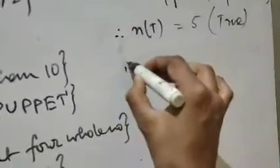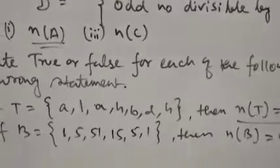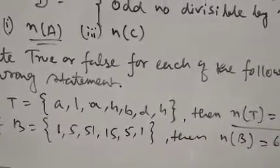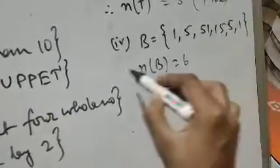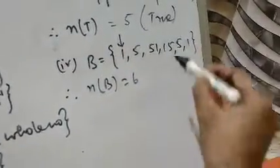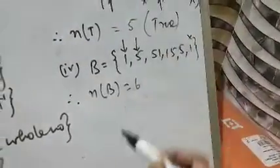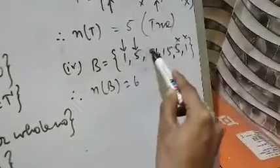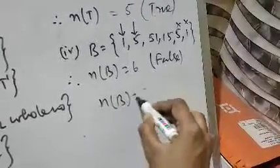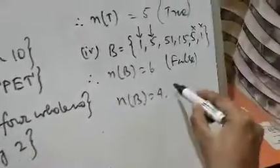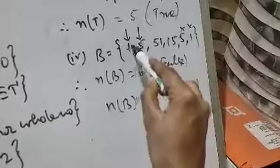Question number 4: set B = {1, 5, 51, 15, 15, 5, 1} and it is stated that n(B) = 6. Let us check — element 5 is repeated and element 1 is repeated, so we consider each only once. The unique elements are 1, 5, 51, 15 — that gives 4 elements. Therefore the statement n(B) = 6 is FALSE. The correct statement is n(B) = 4.